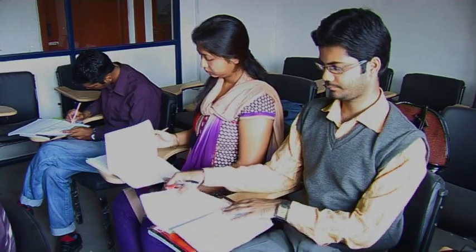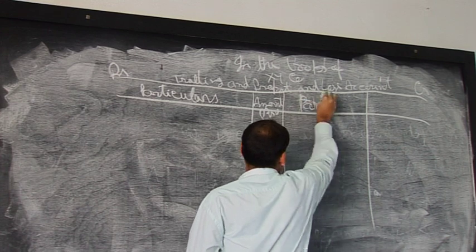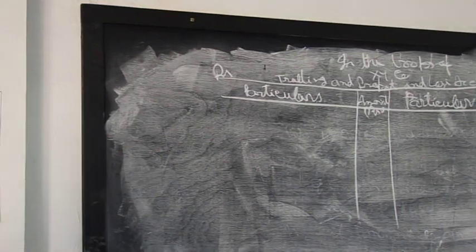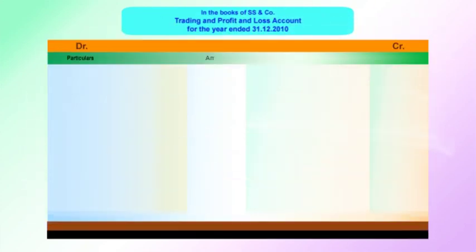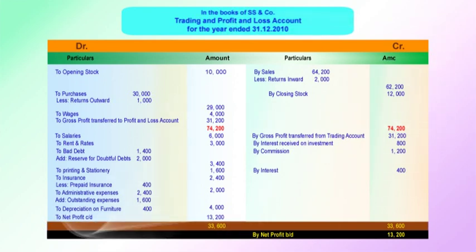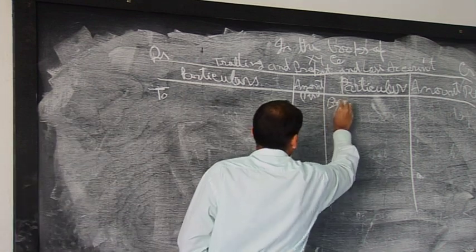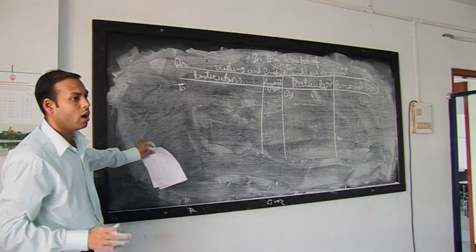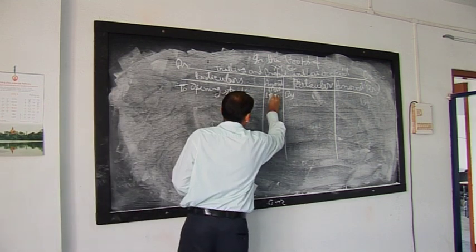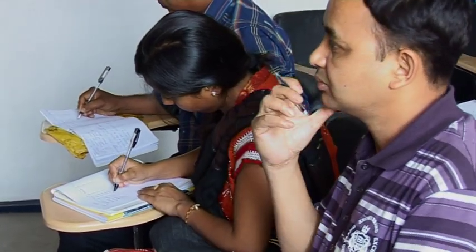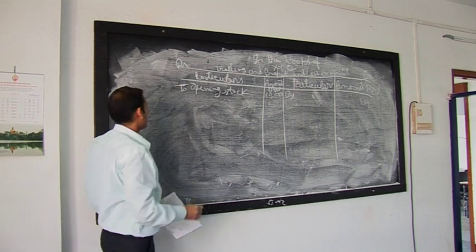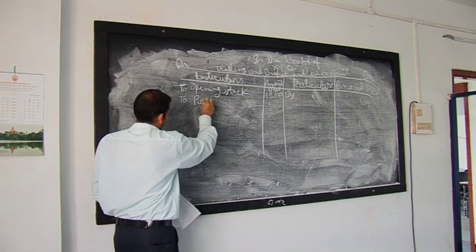The items of the trading account — on the debit side, the first item is opening stock: 10,000, taken from the debit side of the trial balance. Next is purchases: the amount in the trial balance is 30,000. We need to check for any adjustments. There is a returns outward figure of 1,000 on the credit side of the trial balance.